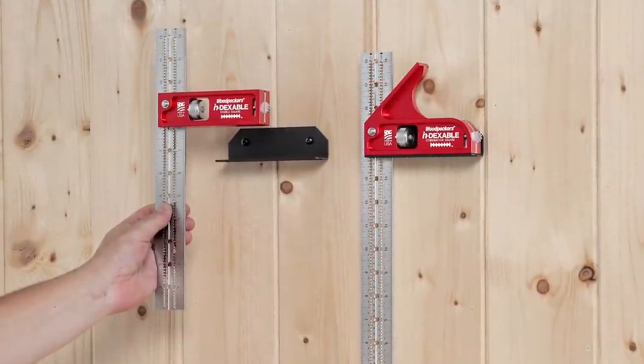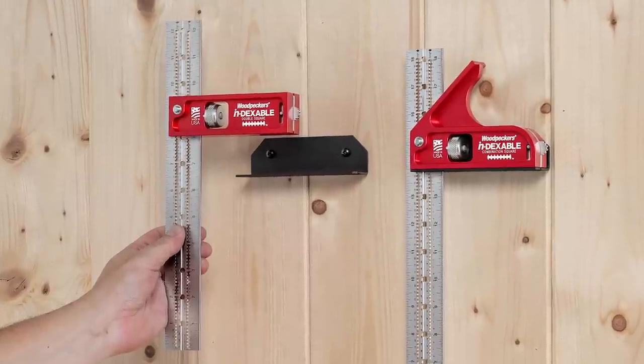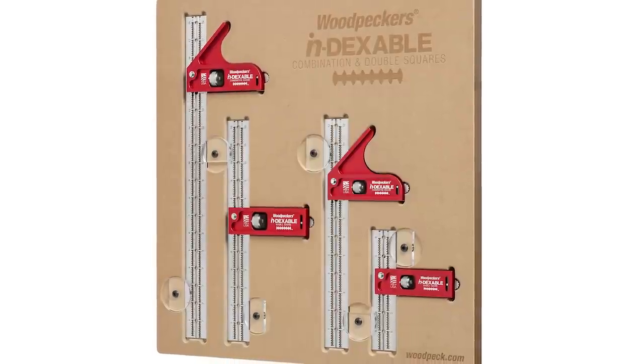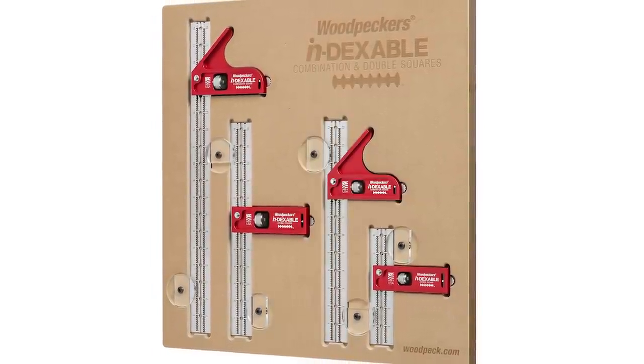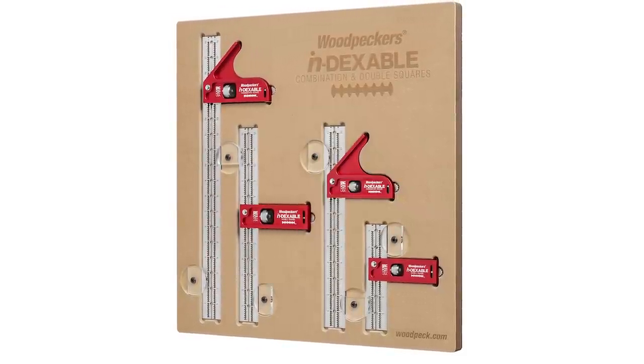Each adjustable square comes with a wall mountable racket to keep your square right in plain sight, ready to go to work. The complete set of four adjustable squares comes with a wall mountable MDF case with precision machined storage compartments for each square.